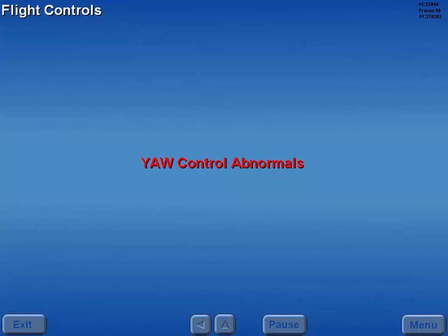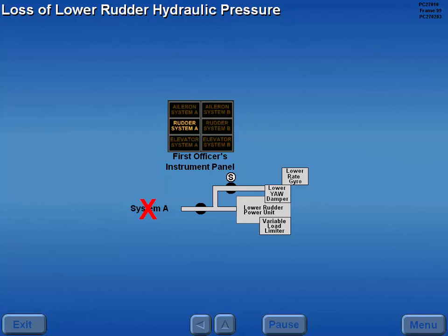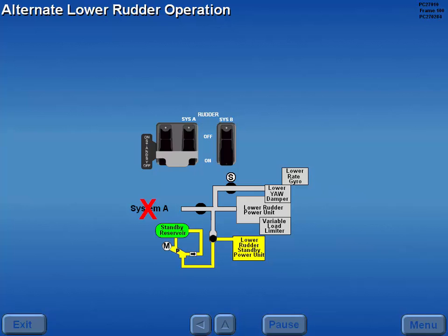Now let's look at the yaw control abnormals. Should a loss of system A hydraulic pressure to the lower rudder occur, the rudder system A light illuminates. Alternate lower rudder operation is provided by the standby hydraulic system.